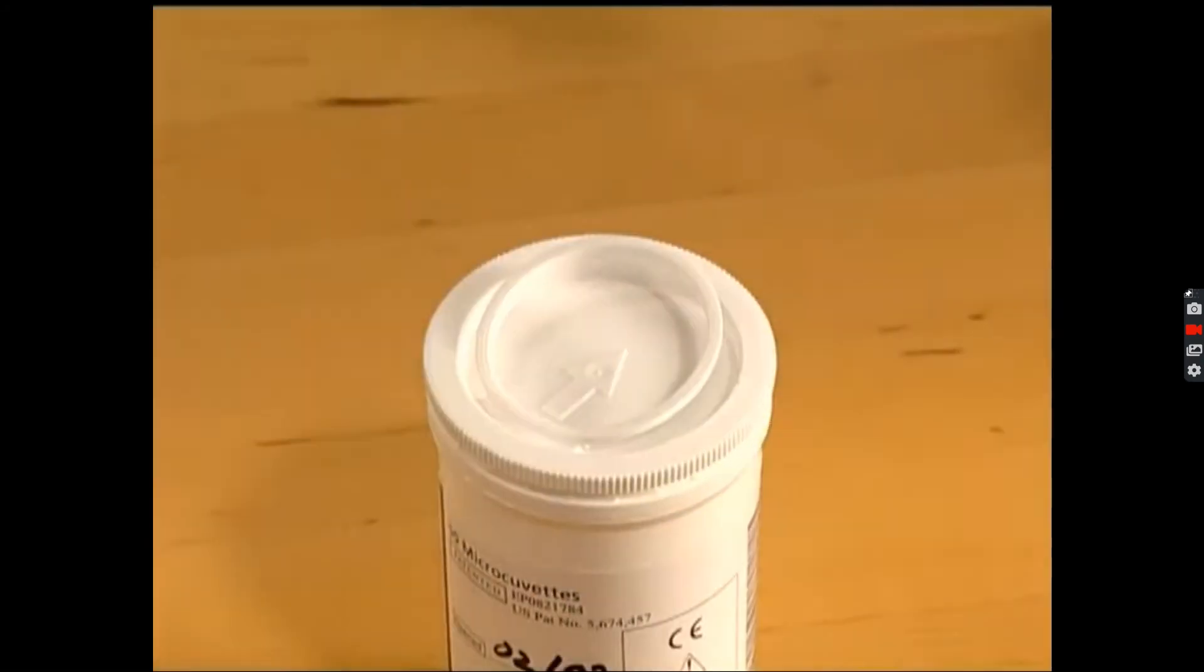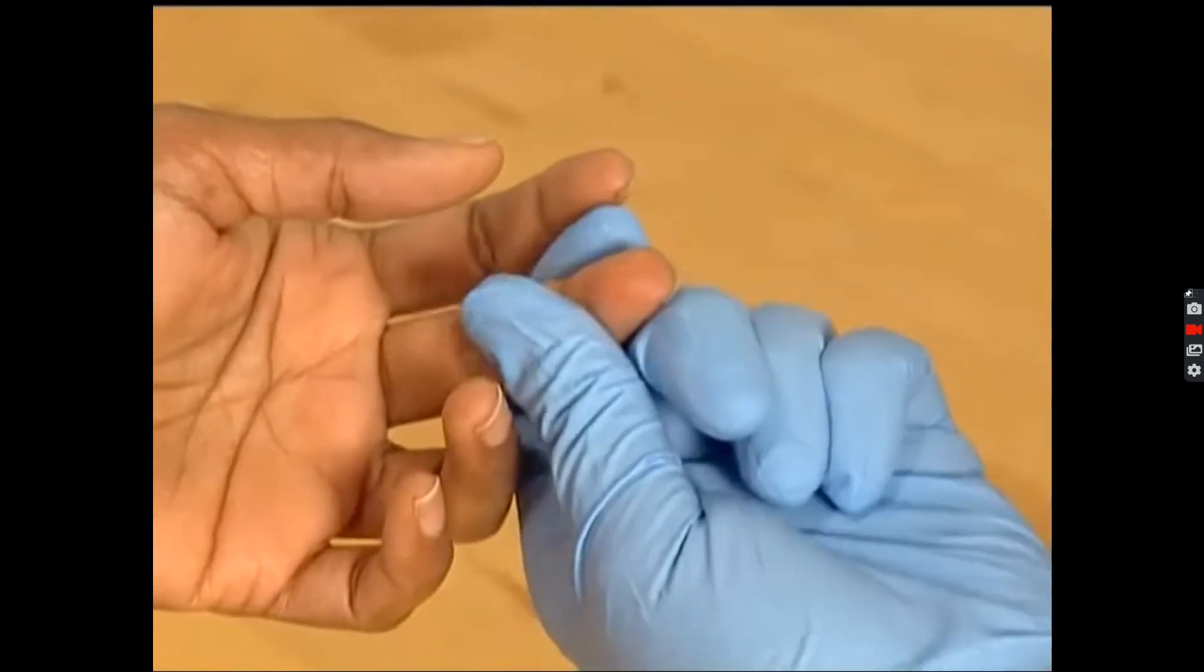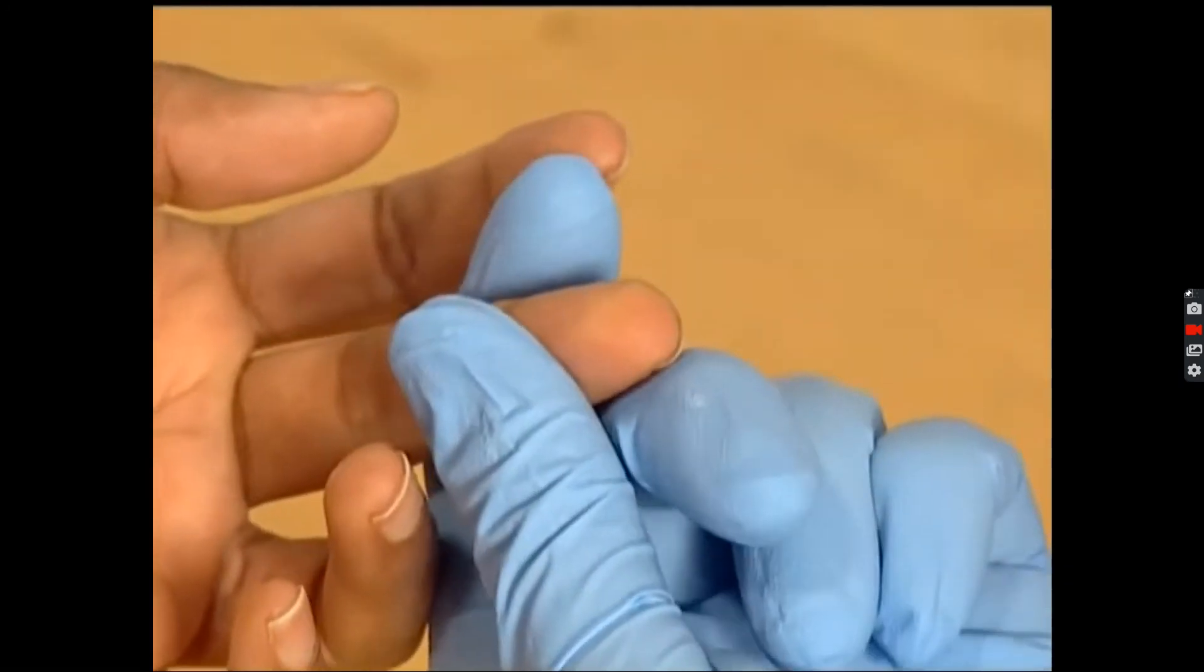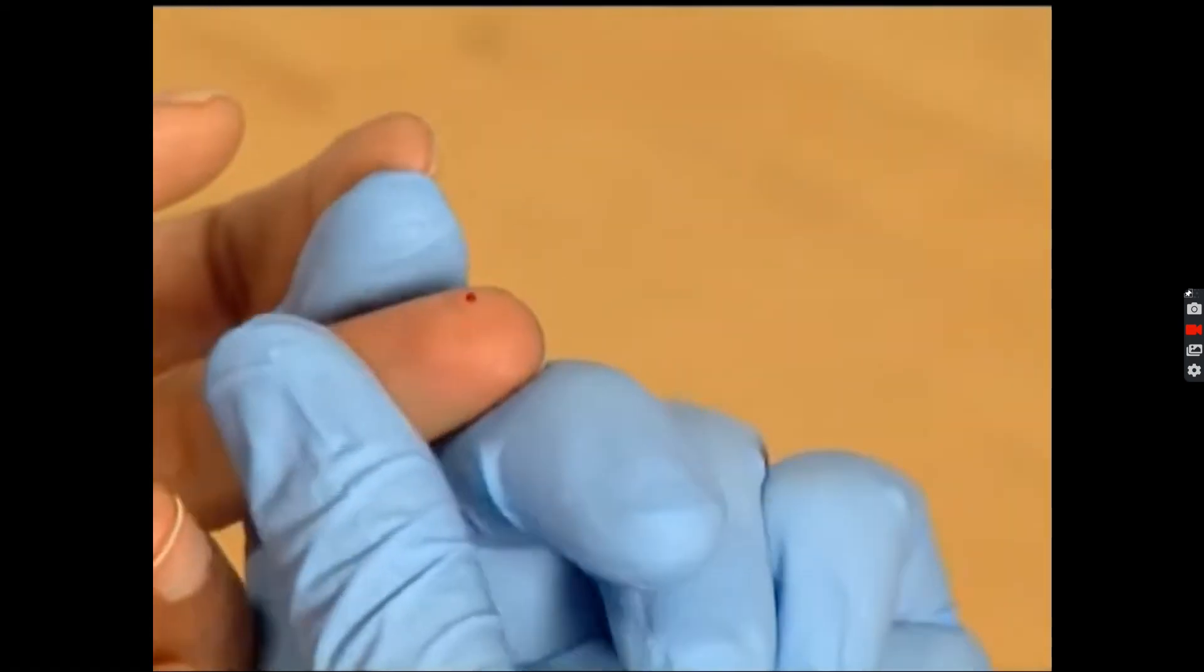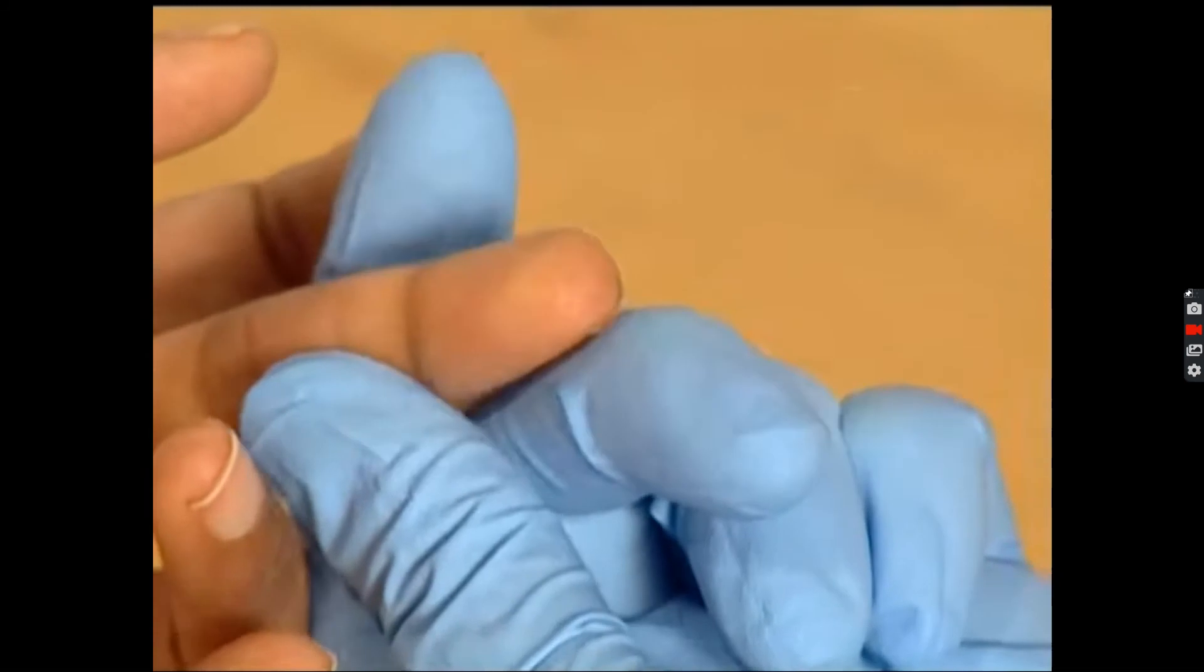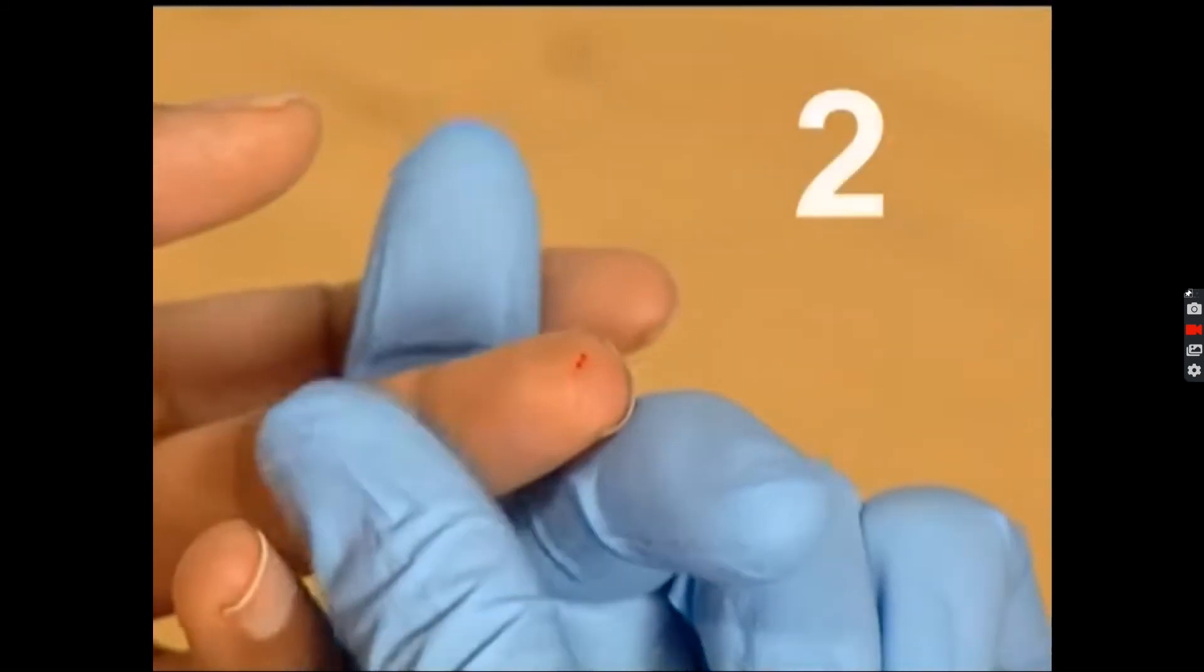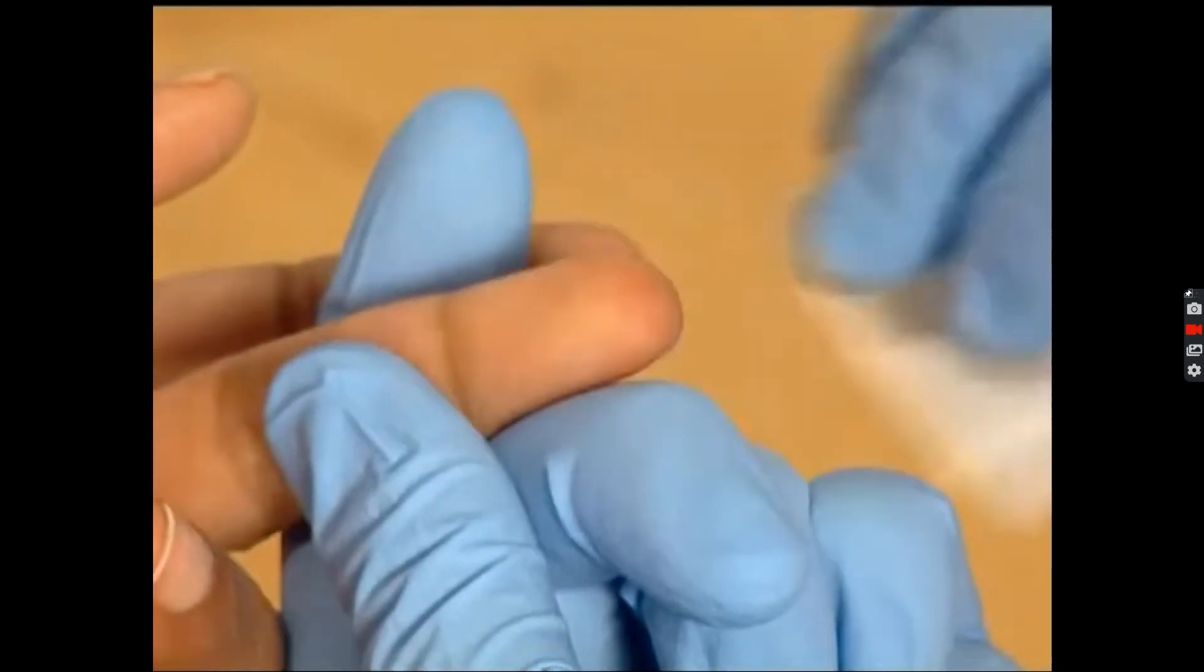Remove a single microcuvette from the container. Collect a drop of capillary blood from your patient. It is quite essential here that you use proper techniques for collecting the blood and that you wipe off any remaining alcohol three times before using the actual blood. So this is the third drop.